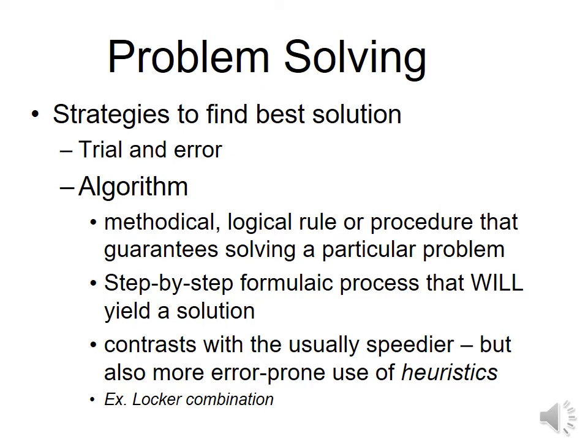An algorithm is a set of rules, procedures, or steps that guarantee a correct solution. In psychology, algorithms aren't always mathematical formulas, but they are methodical. The problem is they may require a large amount of time. Example: to find a lock combination algorithmically, you'd start at 0-0-0, then 0-0-1, 0-0-2, and continue through every possible combination — guaranteed to open it, but very slow. In reality, most people skip 0-0-0 assuming no one would set that combination.